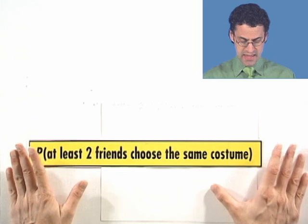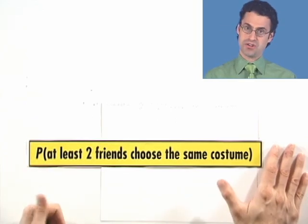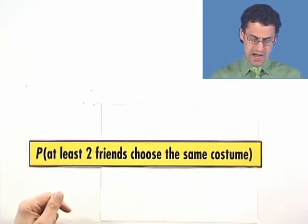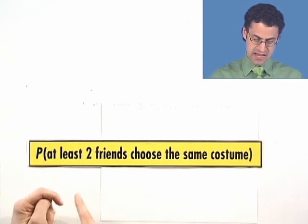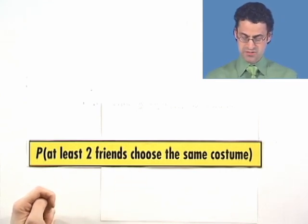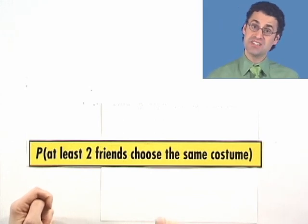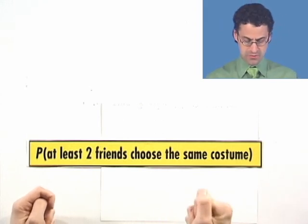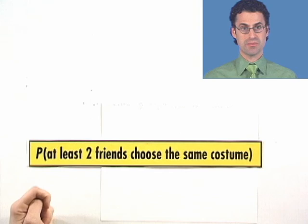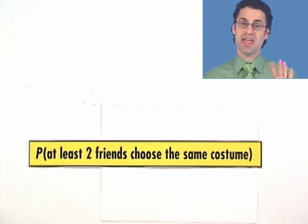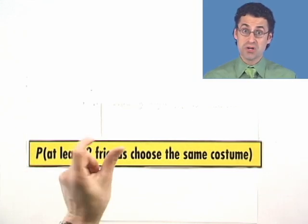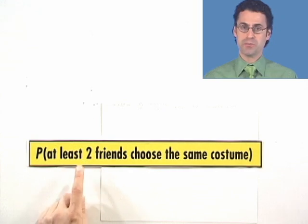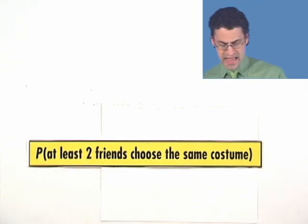And, if three people have the same costume, which three? It could be Mary, Tom, or Jane, or it could be Jane, Tom, and Carol, and so forth. So there's lots of ways. It's just too much. Instead, let's do the opposite question. So what's the opposite of, it's not the case that at least two people, two friends choose the same costume.